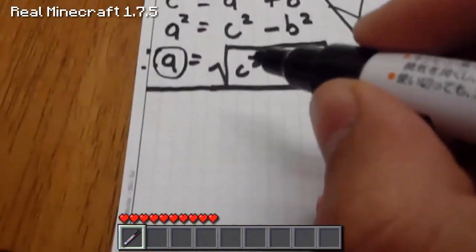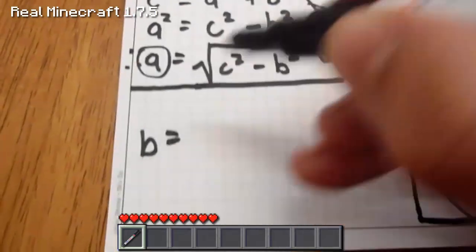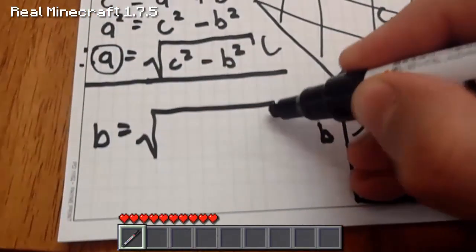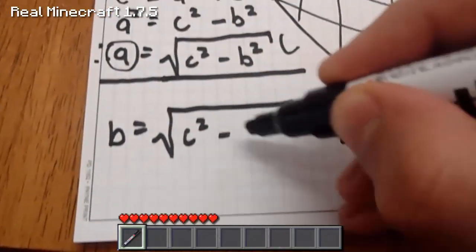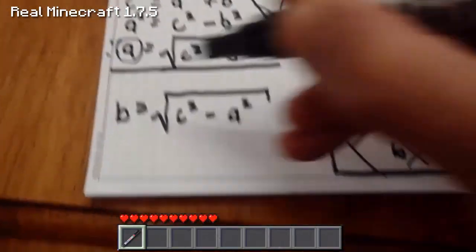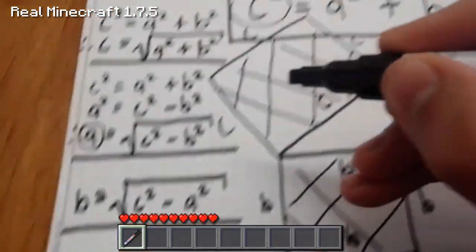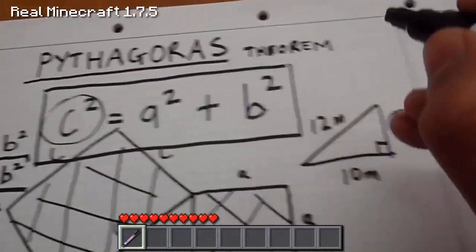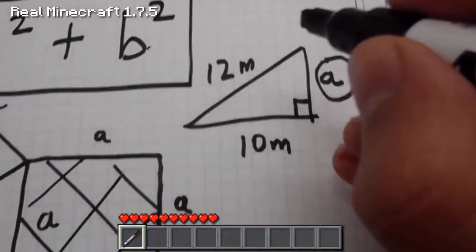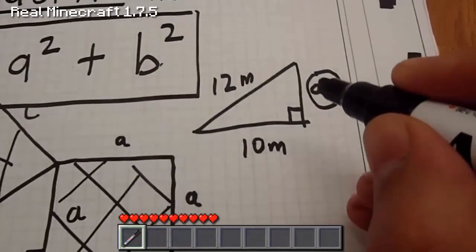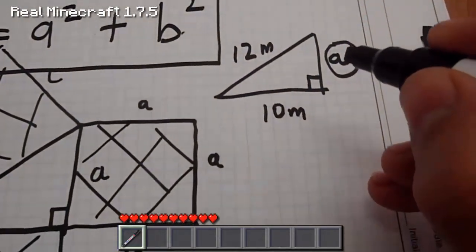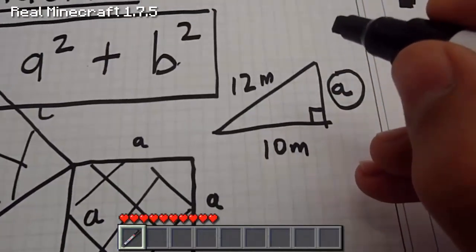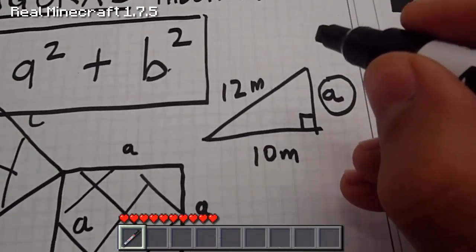And without deriving B, I'll simply just write it down: B equals the square root of C squared minus A squared. So there are your basic formulas from the Pythagoras theorem - if you know the measurements of two sides, you can work out the distance of the other unknown side of the triangle.